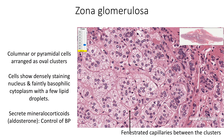Zona glomerulosa shows columnar or pyramidal cells arranged as oval clusters. These clusters are surrounded by a delicate network of connective tissue. Cells show densely staining round nuclei and faintly basophilic cytoplasm containing smooth endoplasmic reticulum, mitochondria, rough endoplasmic reticulum, ribosomes, and a few lipid droplets. These cells secrete mineralocorticoids, mainly aldosterone, which helps in controlling blood pressure. The cells are influenced by renin and angiotensin secretion. Between the oval clusters, we see fenestrated capillaries.